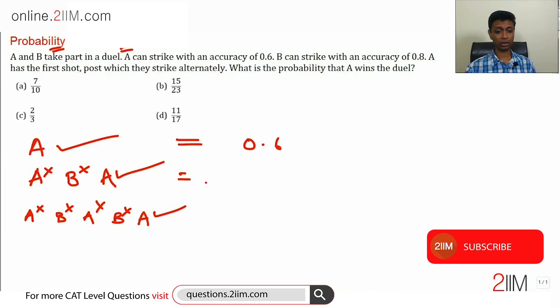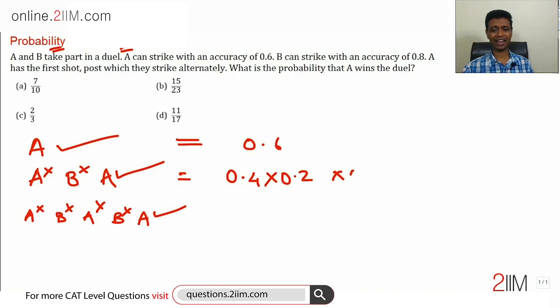What is the probability of winning on shot one? This is very simple: 0.6. On shot three, A should miss with probability 0.4, B should also miss with probability 0.2, and then A should get it right: 0.6. On the fifth shot: 0.4 × 0.2 × 0.4 × 0.2 × 0.6. A misses, B misses, A misses, B misses, and then A strikes.